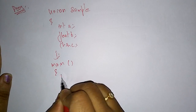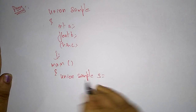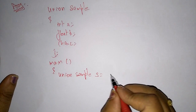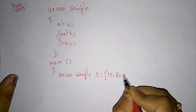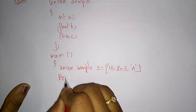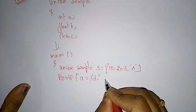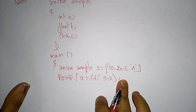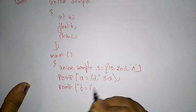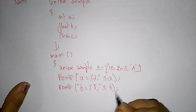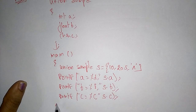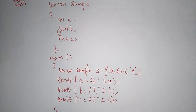In the main program, declare union sample s, and initialize with values 10, 20.5, and 'a' — so integer a gets 10, float b gets 20.5, and character c gets 'a'. Then write printf statements: 'a = %d' using s.a, 'b = %f' using s.b, and 'c = %c' using s.c, using the dot operator to access the union variable values. Then close the main program.